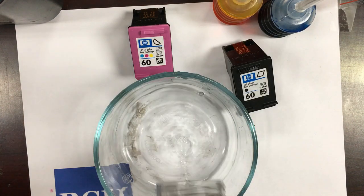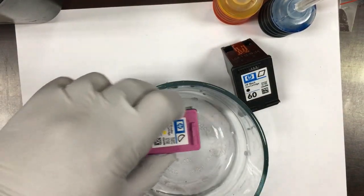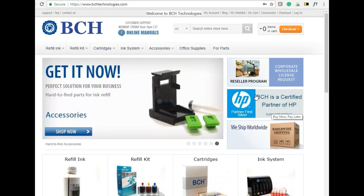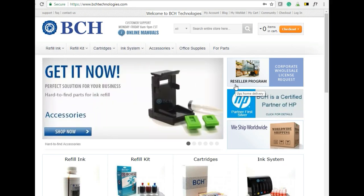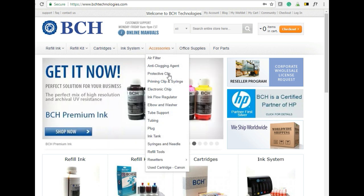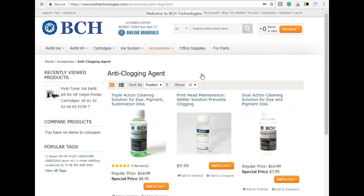We need to soften dried ink. So we fill a bowl with about a quarter to half inch of water and then we put the printhead on it. If you want something more powerful than water, you can go to bchtechnologies.com and go to accessories and the anti-clogging agent. And then we have two kinds of cleaning solutions. One is green, which is a little bit more powerful. Another is the clear kind and it's a little bit cheaper.